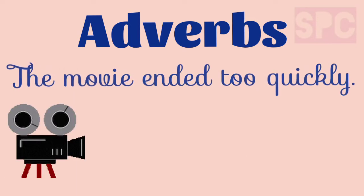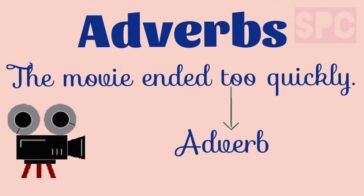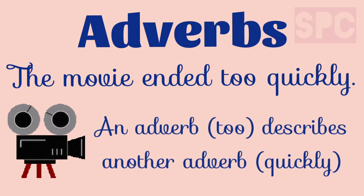Third example: the movie ended too quickly. In this sentence, the adverb 'too' describes how quickly the movie ended. The word 'quickly' is an adverb. So, this sentence is an example where an adverb describes another adverb.